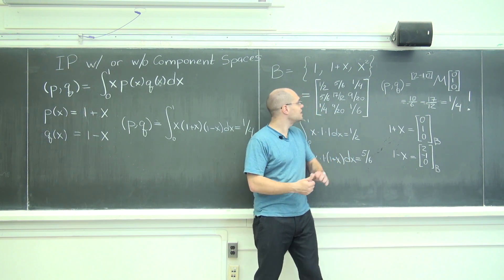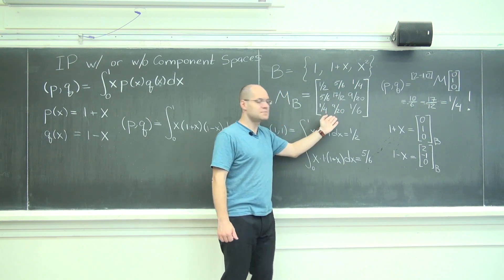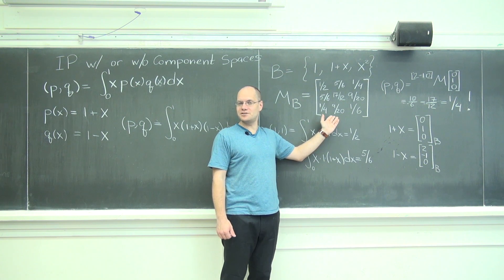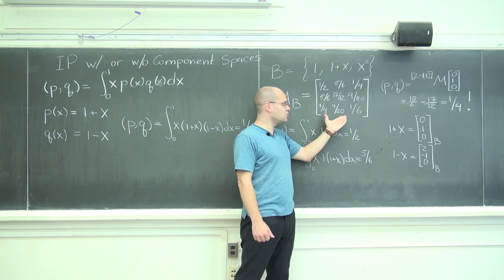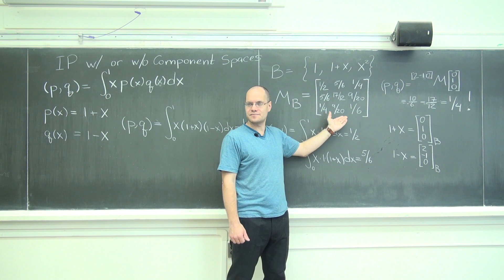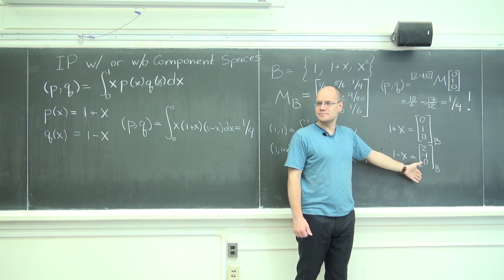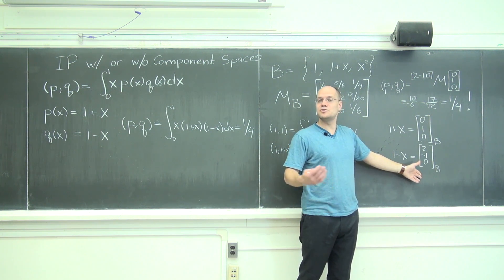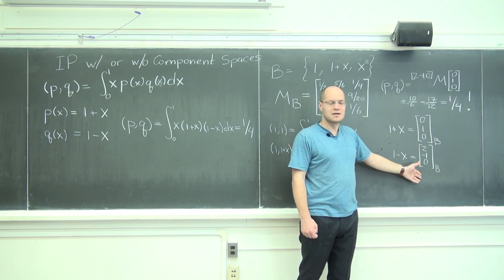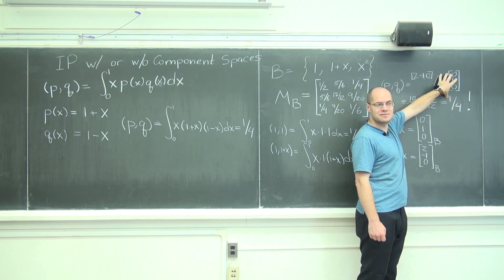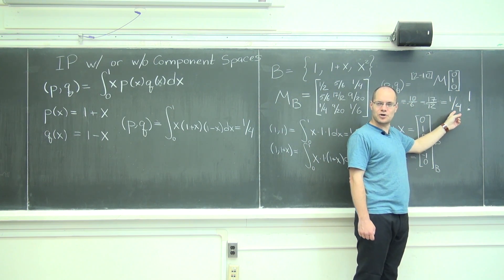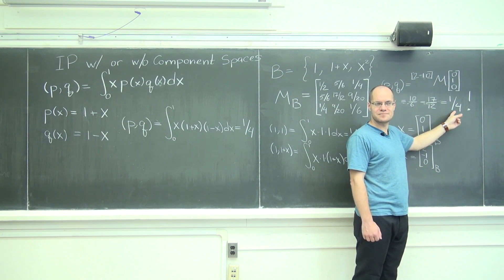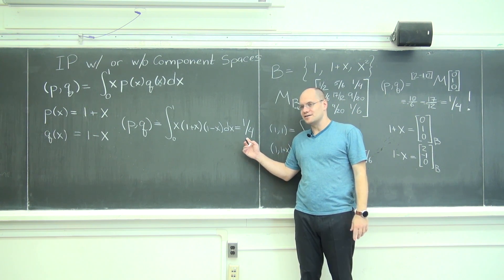Well when people say invariant versus variant they mean what would change and what would remain unchanged if we chose a different basis. It's a question of a choice of basis. So if I chose another basis, would this matrix be the same? No, it would be a completely different matrix because the vectors that I'm dotting to form this matrix are totally different. Would these components be the same? No, they would be very different because we're decomposing those vectors with respect to a different basis. But once I combine them into this combination, will I still get one quarter? Yes, because it's the same inner product just in a different component space. So this result is an invariant.